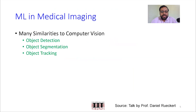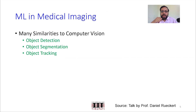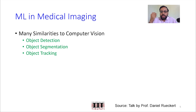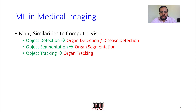With that background, let's compare what is going in computer vision versus the kinds of problems and challenges we have in medical imaging. In computer vision, three important key problems that a computer vision person would look to solve using machine learning or deep learning are: detect an object, segment an object, and track an object. And you could see there are very similar problems in medical imaging as well.